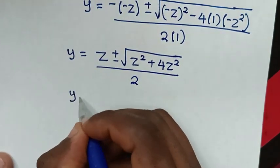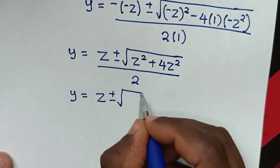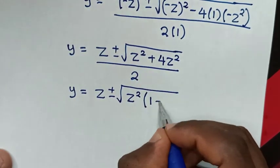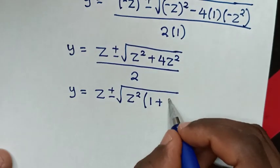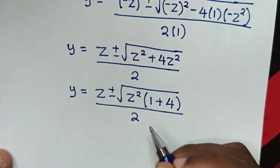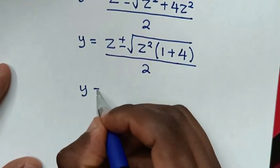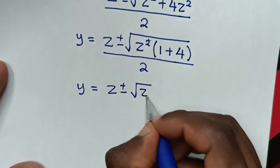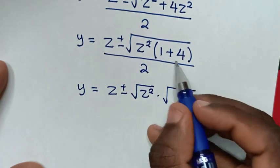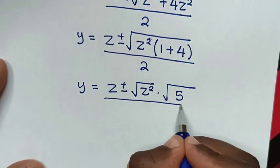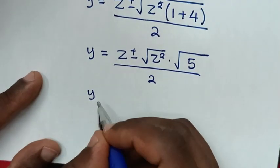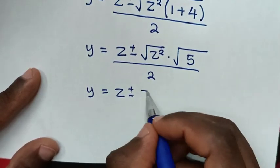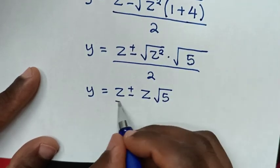In the next step, z² is common inside the square root, so we take z² out of the bracket. This gives √(z² × 5) = z√5, since the square root cancels with the square on z. So y = (z ± z√5) / 2.